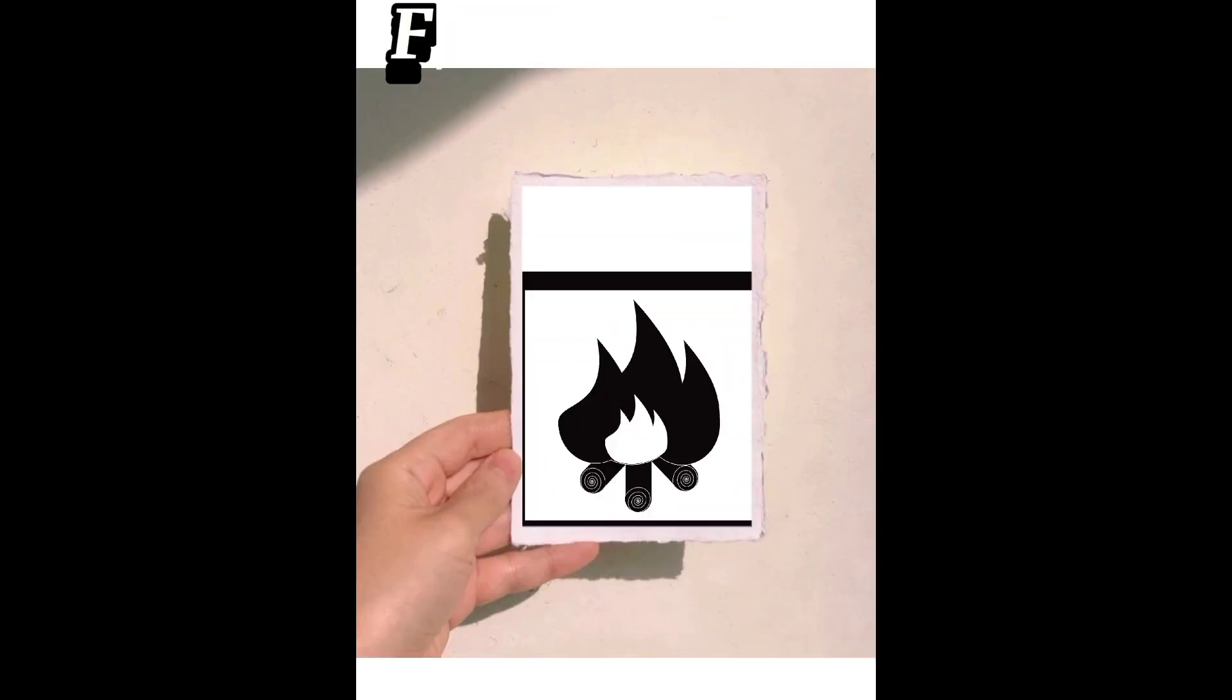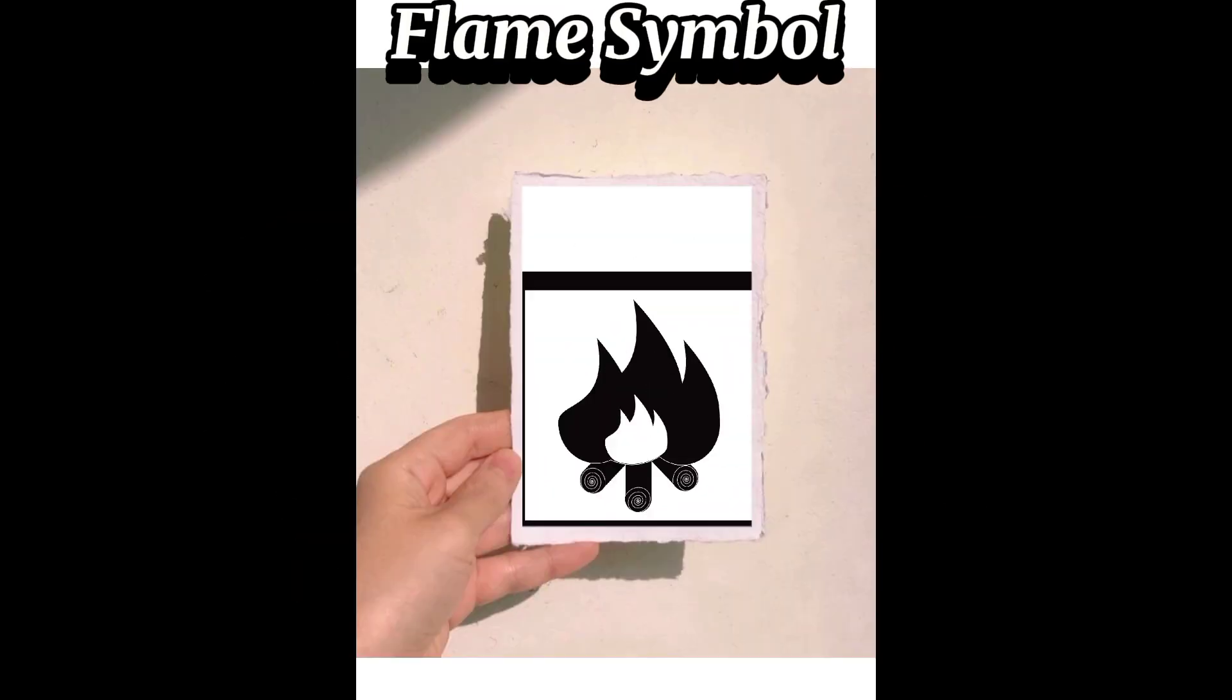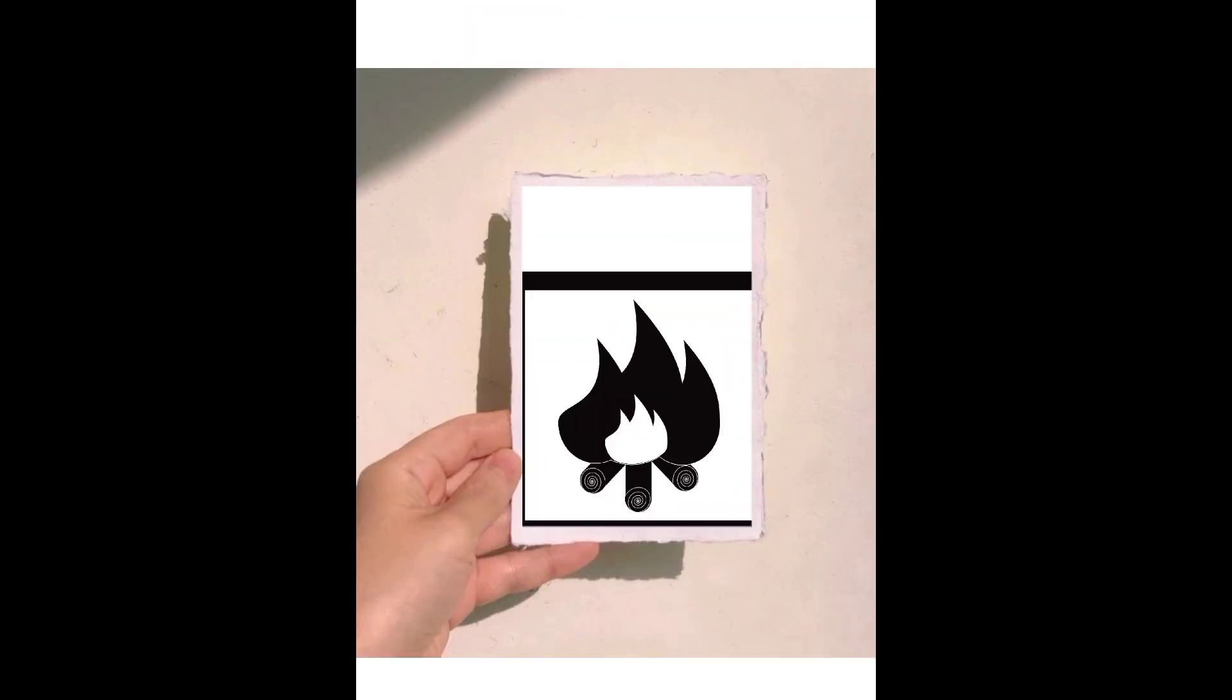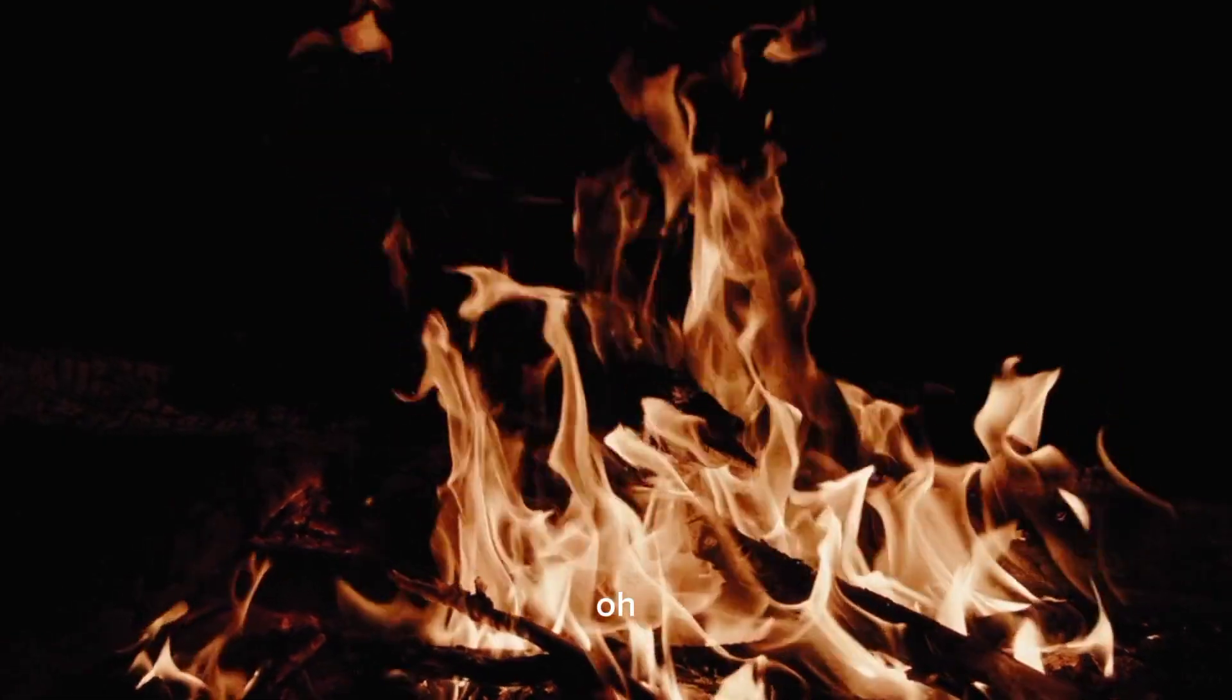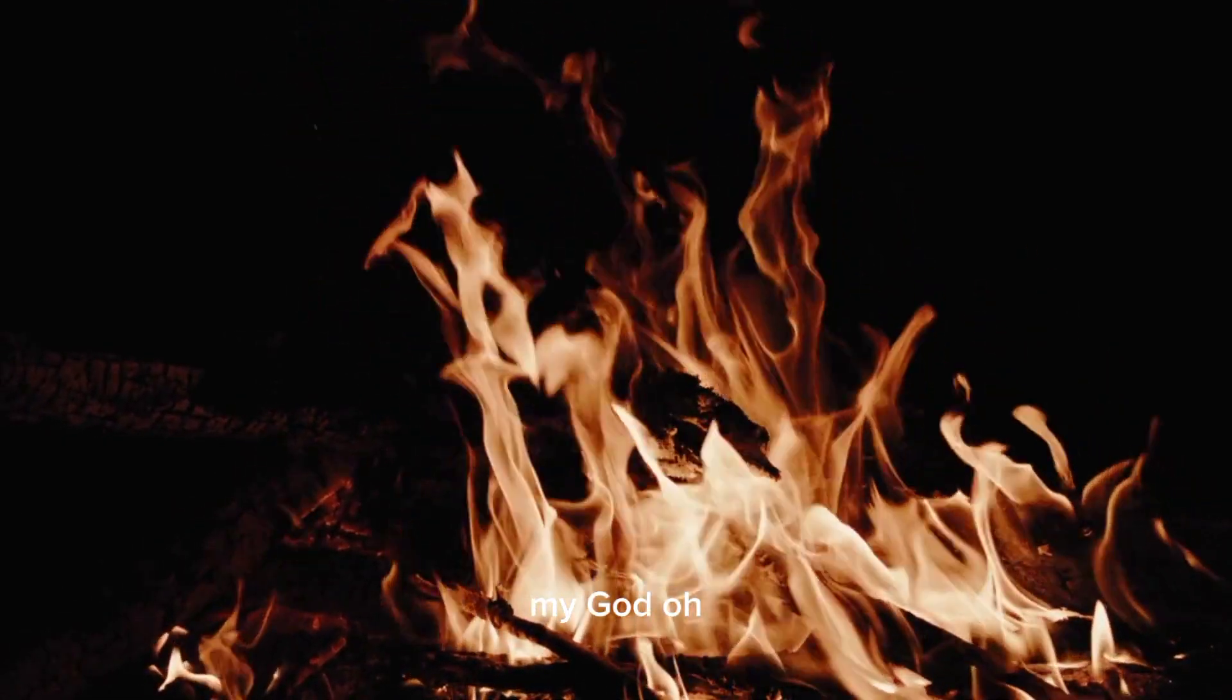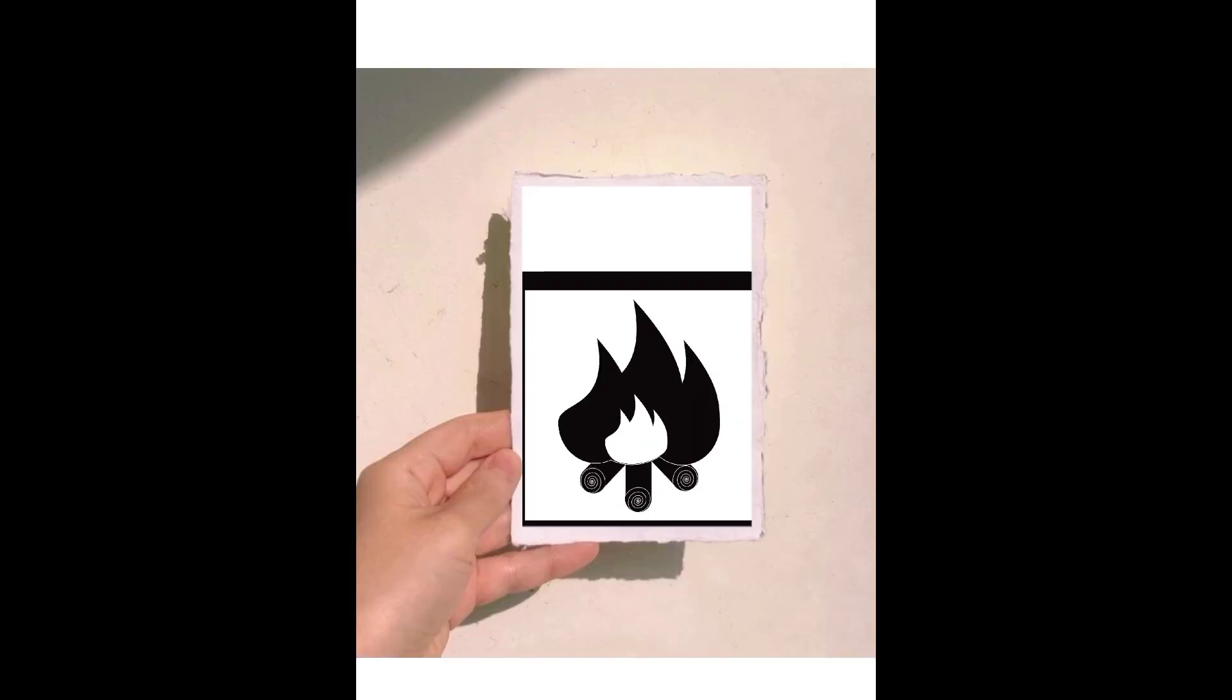At number 6 is the flame symbol. This symbol warns you that the product is flammable and should be kept away from heat or open flames. The flame symbol is another universally recognized symbol for flammability. Tip: Store flammable products in a cool, dry place and never leave them near heat sources.